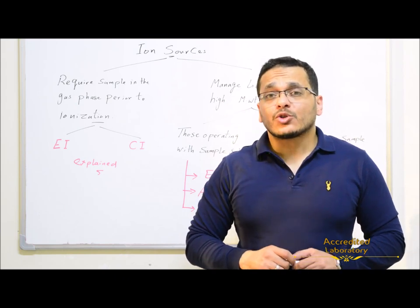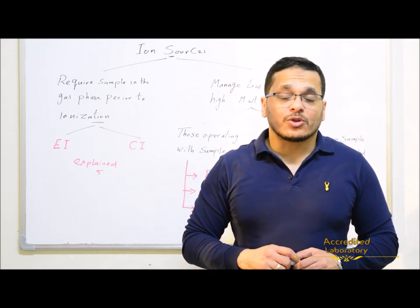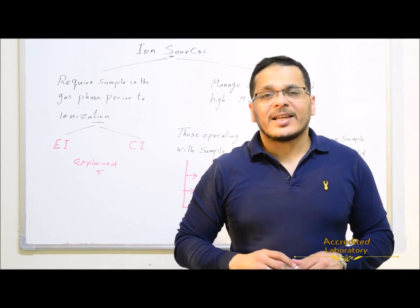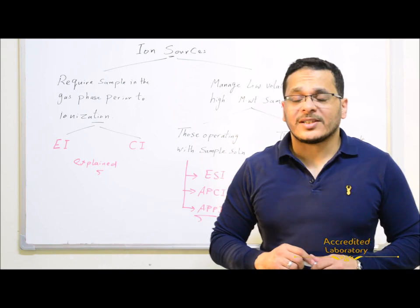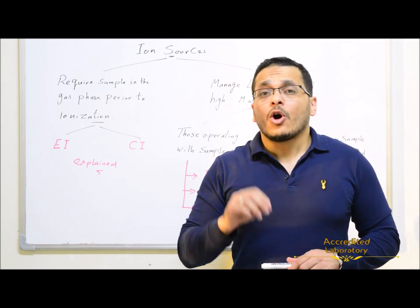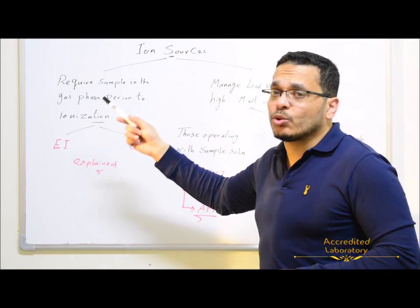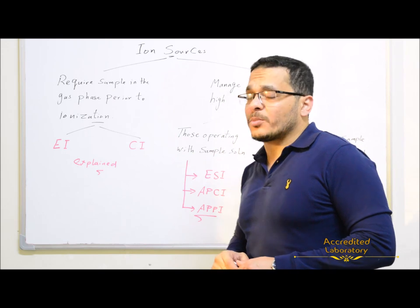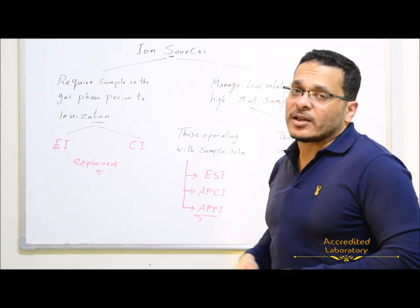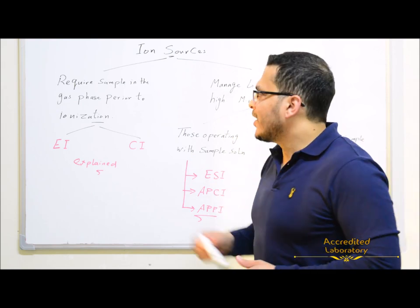As we said in the previous lecture, the ion source or ionization chamber uses electron bombardment for ionization of analyte molecules to charged particles or ions, and separation of these ions from mobile phase ions and neutral molecules from the atmosphere. Ion sources are divided into two types. The first type requires the sample in the gas phase prior to ionization, like electron ionization and chemical ionization techniques.